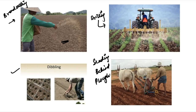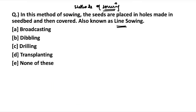The dibbling method involves placing seeds in holes. A dibbler — an equipment used to make holes in the seedbed — is used, and then seeds are placed into the holes and covered. This is a very time-consuming method because the equipment first makes dibbles or holes in the seedbed, then the seed is placed. Coming back to the question: the method where seeds are placed in holes made in the seedbed and then covered is dibbling, and it is also known as line sowing.